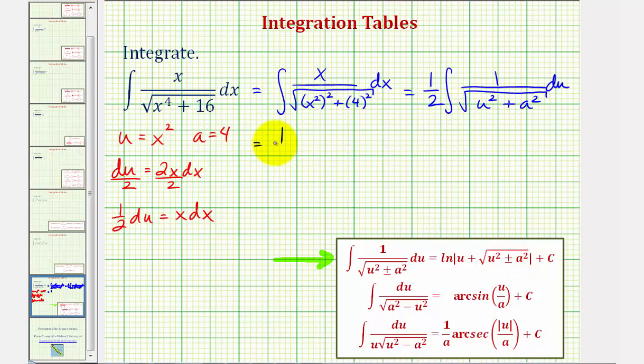So we'll have one-half times natural log absolute value of u, which is x squared, and then plus the square root of, we have u squared.